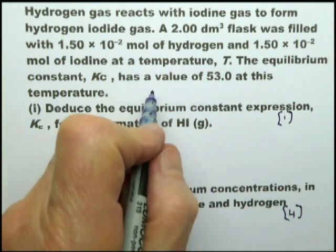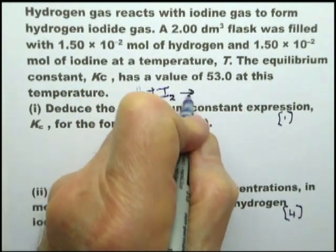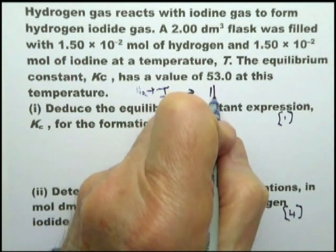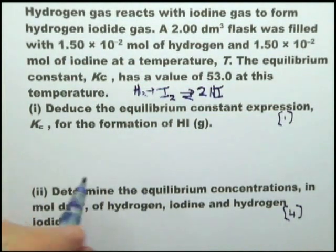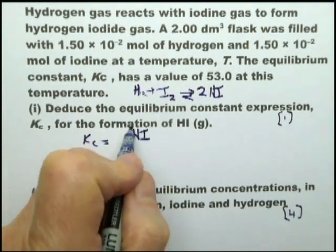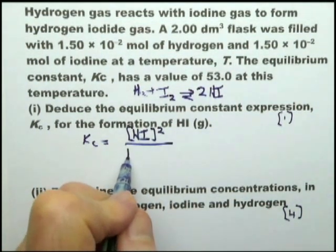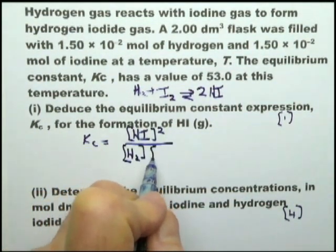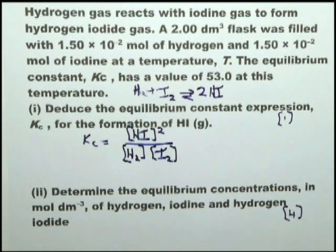The first thing to do is write the equation down. It's H2 plus I2 goes to, that's reversible arrows, 2HI. And therefore, the equilibrium constant expression Kc equals [HI], it's always the product, and it's squared, that 2 is that 2, over [H2] times [I2]. Now that's something that you could do in less than 30 seconds. You write the equation down, then you do the expression.